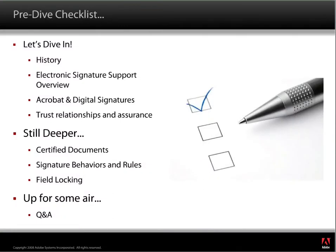Today we're going to start just below the surface of electronic signatures, and then start to look at digital signatures, diving deeper into some of the options and capabilities of Acrobat, ranging from signing and validation to trust and assurance. Dive master Phil will then bring us still deeper, looking into concepts like certified documents, signature behaviors, and field walking, hopefully without getting you into the bends. And then we'll come back up and answer any remaining questions after the dive.